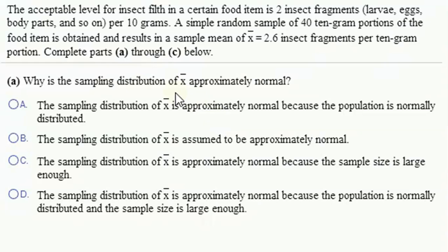Why is the sampling distribution approximately normal? Because the sample size is large enough. 40 is a good sample size. A rule of thumb often you'll see is 30, but 40 is probably good enough to guarantee approximate normality.